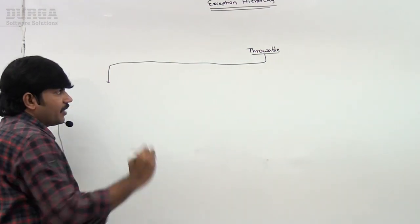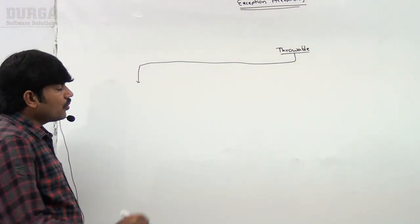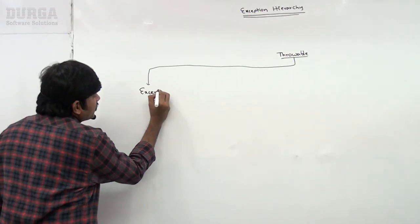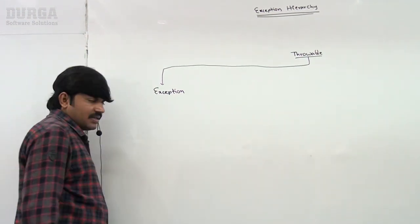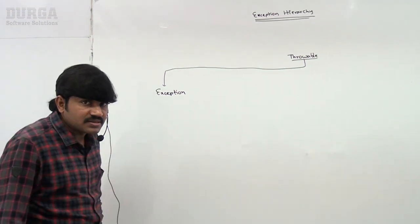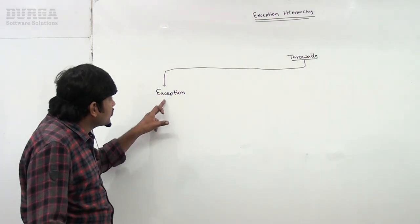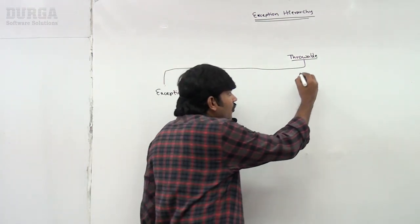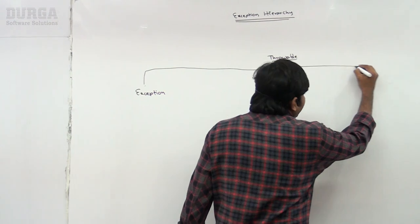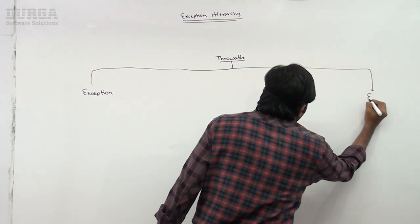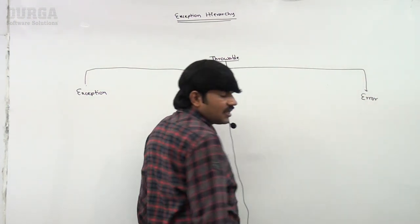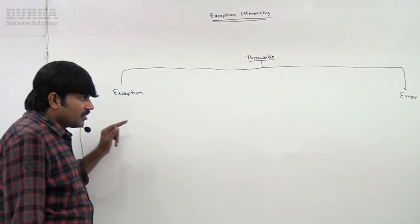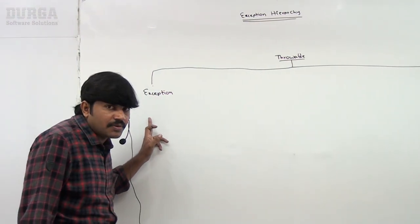Throwable class contains two child classes. The first child class is Exception, and the second child class is Error. So there are two child classes under Throwable: Exception and Error.